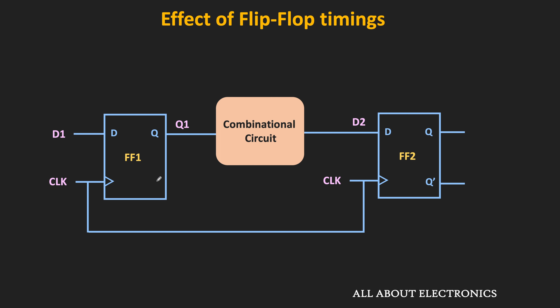At the clock edge, the first flip-flop will sample input D1, but the corresponding output will appear only after the propagation delay of the flip-flop, denoted TCKQ — representing the time after which the Q1 output will appear after the clock edge. Based on this output, the combinational circuit will generate its own output after its own propagation delay TPD. That means after the clock edge, based on input D1, the new input for the second flip-flop will appear only after this propagation delay.